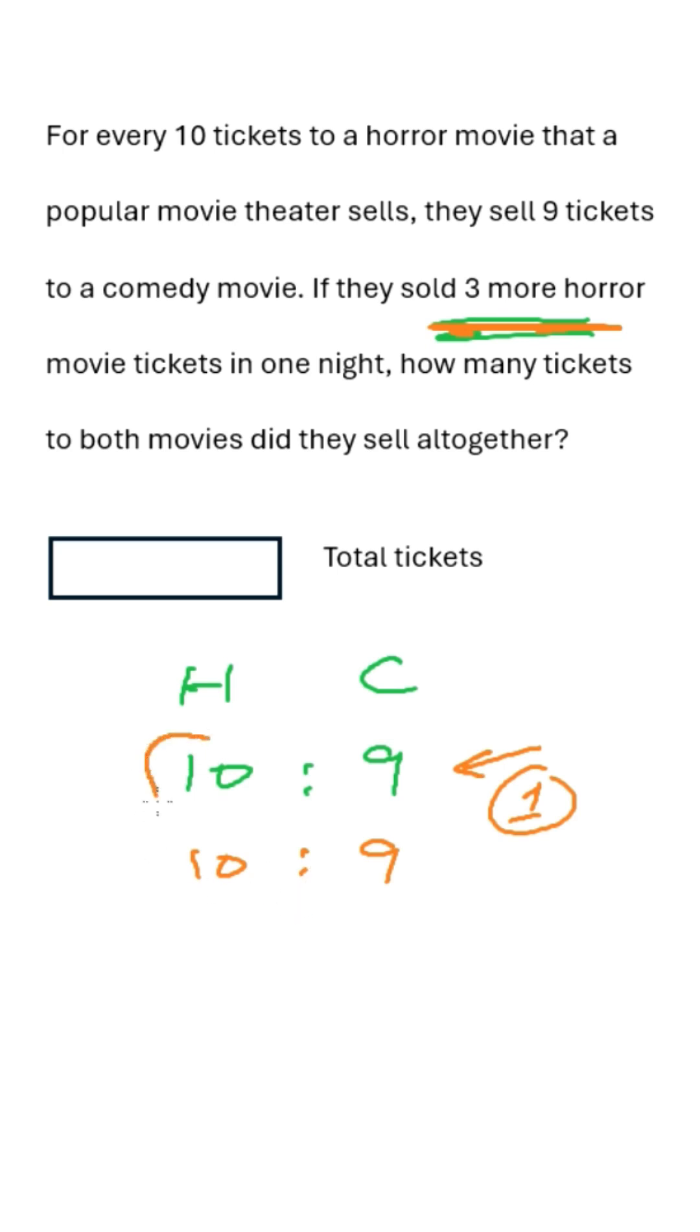So this will become total 20 and 18. So the difference is 2 now. Now you get the idea.